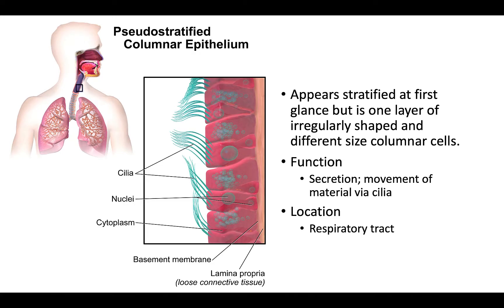Pseudostratified columnar epithelium appears stratified, but it's actually simple — just one layer of cells. They're all irregularly shaped in their columns, so they'll be columnar. They're really active in secretion and movement of the material that they're secreting with the cilia on the outside.